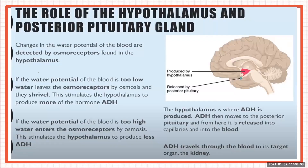What is the role of the hypothalamus and posterior pituitary gland in osmoregulation? Changes in the water potential of the blood are detected by osmoreceptors, which are found in the hypothalamus.